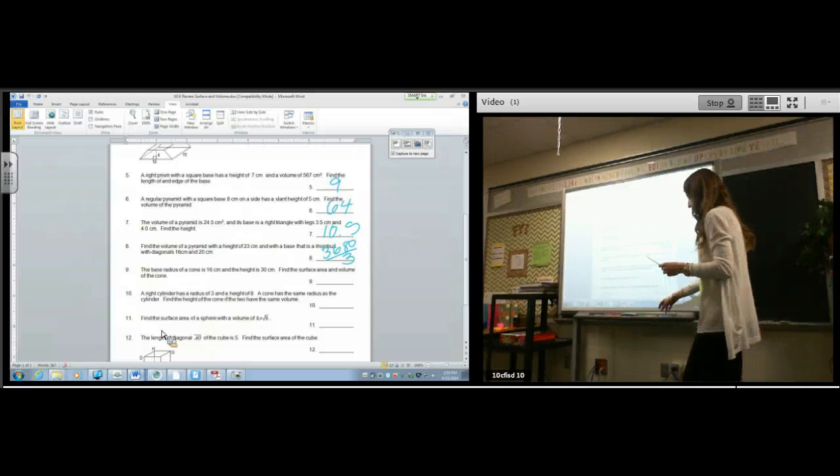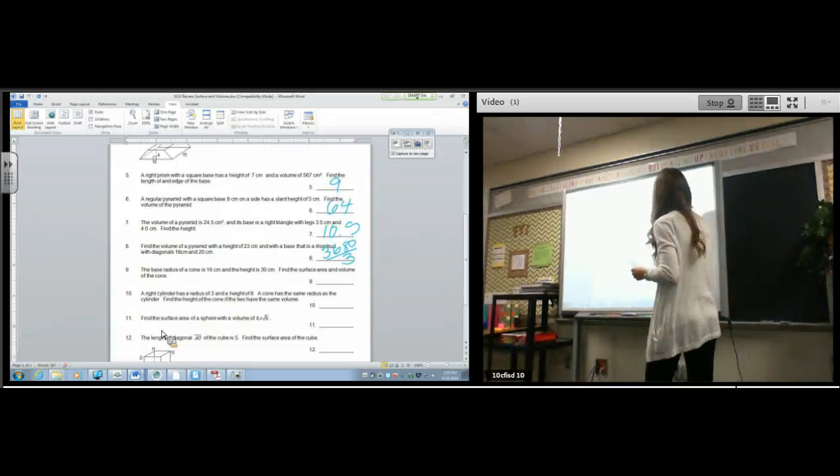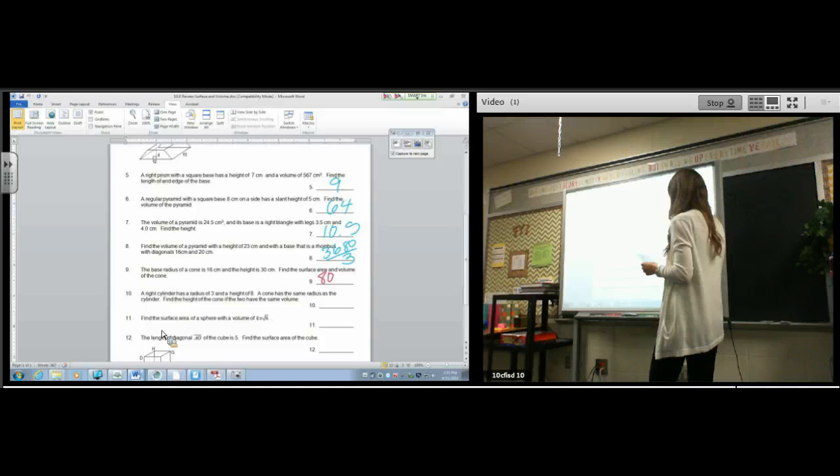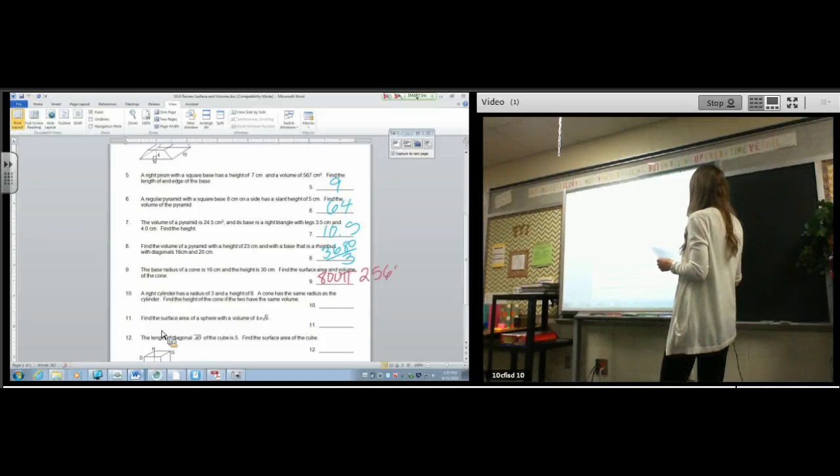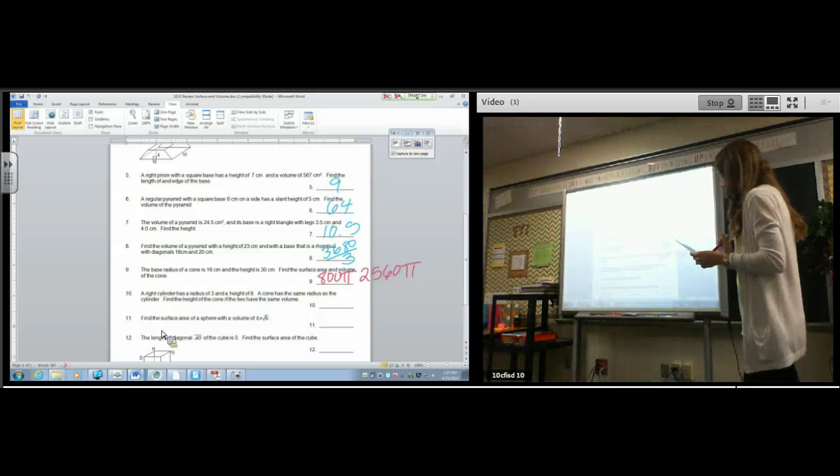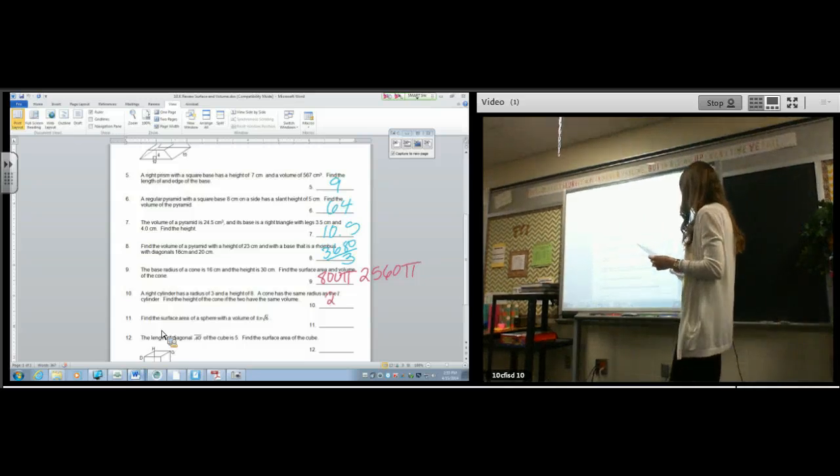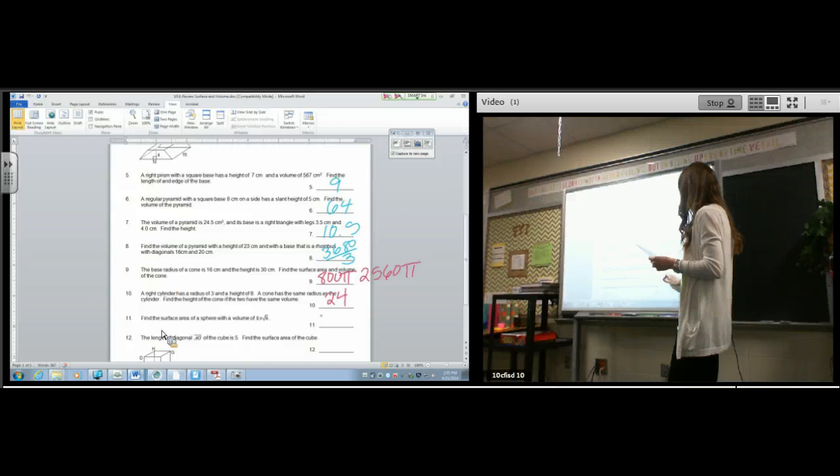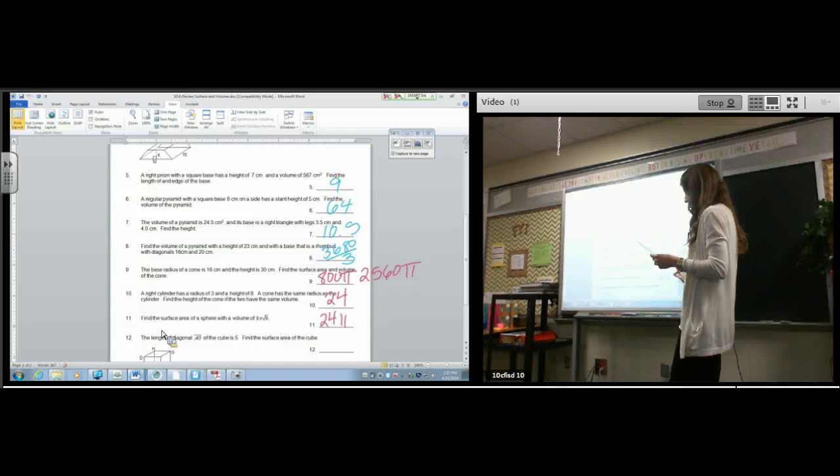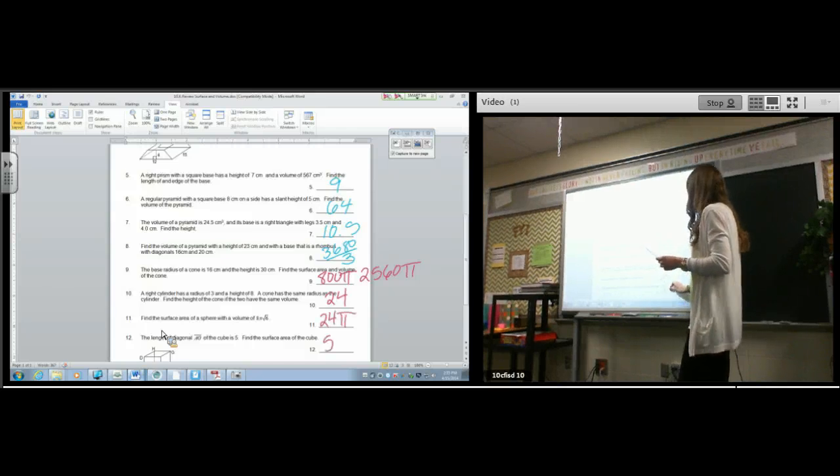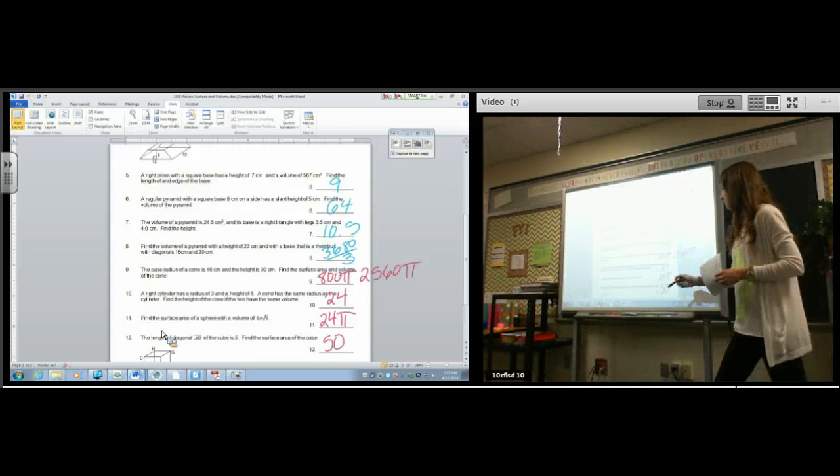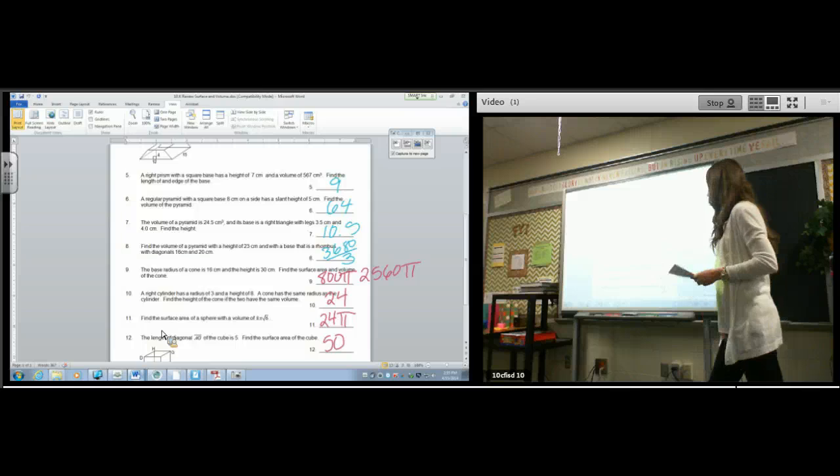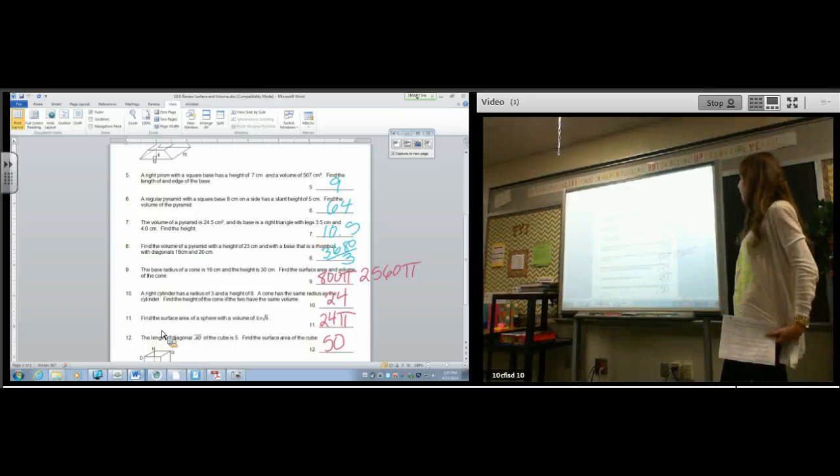Number 9, it asks for two things. The surface area is 800 pi, and the volume is 2,560 pi. Number 10, 24. Number 11, 24 pi. And number 12 is 50. You can do 11 and 10. Let's do 10 first, then we'll do 11.